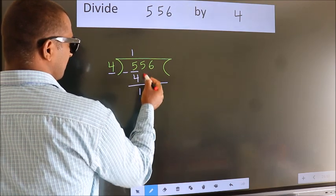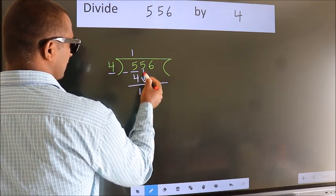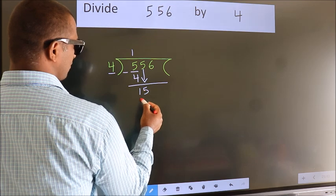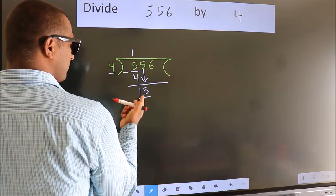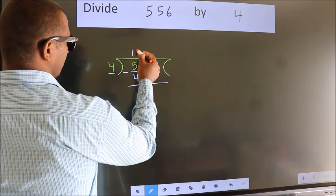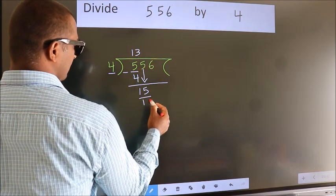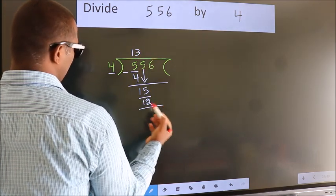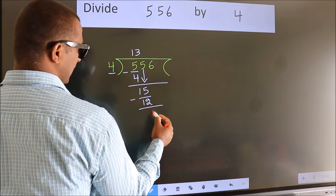After this bring down the beside number. So 5 down. So 15. A number close to 15 in 4 table is 4 3s 12. Now we subtract. We get 3.